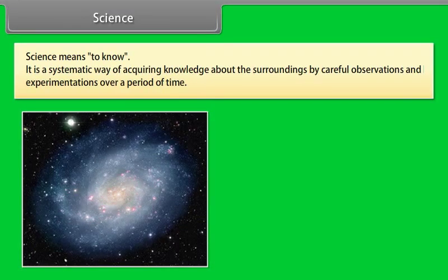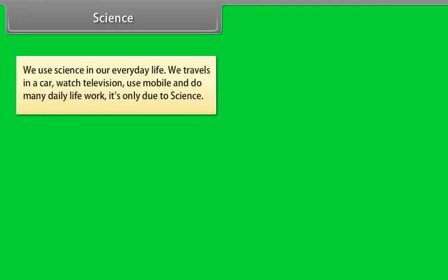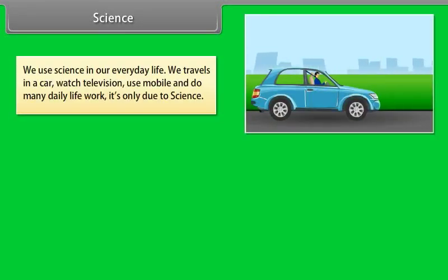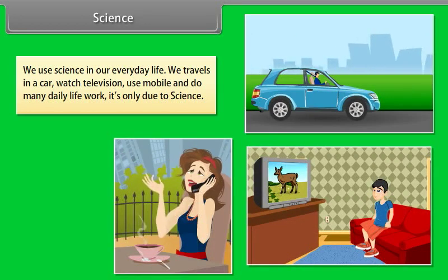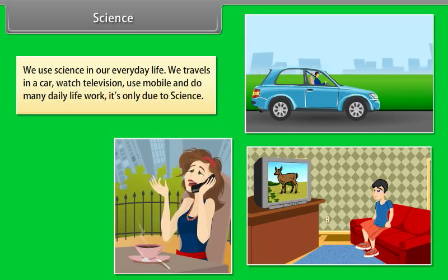Science. Science means to know. It is a systematic way of acquiring knowledge about the surroundings by careful observations and experimentations over a period of time. We use science in our everyday life. We travel in car, watch television, use mobile and do many daily life work. It is only due to science.